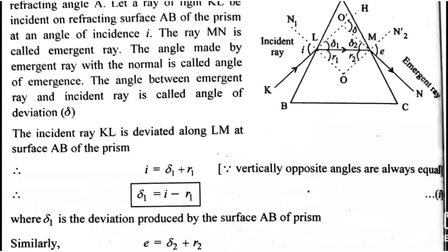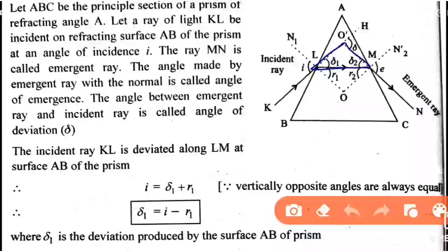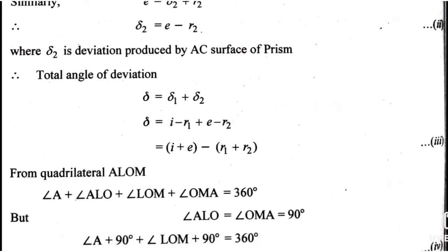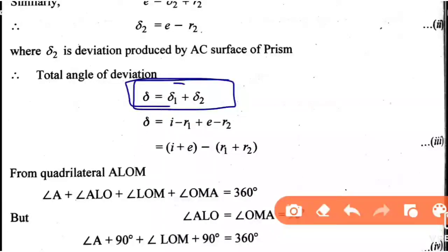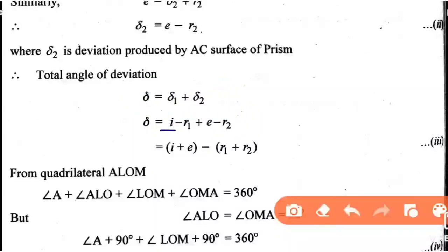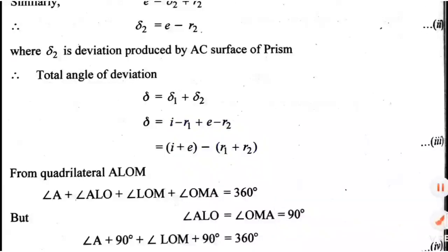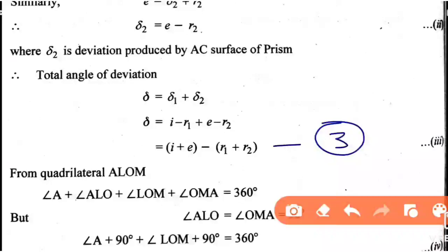Next, we choose a small triangle. From Class 9 theorem: the exterior angle equals the sum of two opposite interior angles. So delta = delta-1 + delta-2. Substituting: delta = (i - r1) + (e - r2), which simplifies to delta = i + e - (r1 + r2). This is equation number 3.